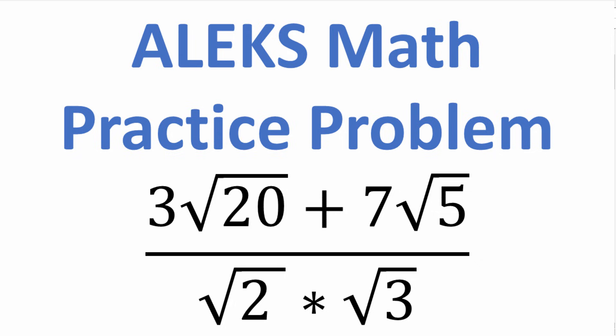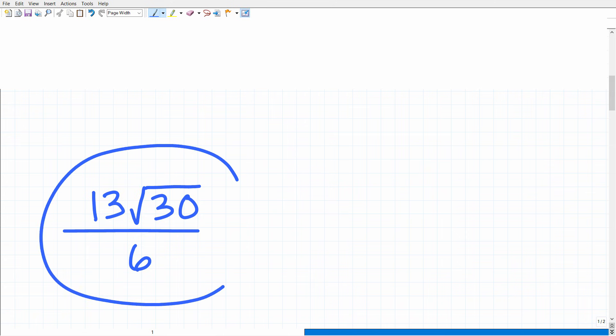Again, we have 3 square root of 20 plus 7 square root of 5 over square root of 2 times the square root of 3. What is this all equal to? Well, this is the correct answer. So 13 times the square root of 30 over 6.